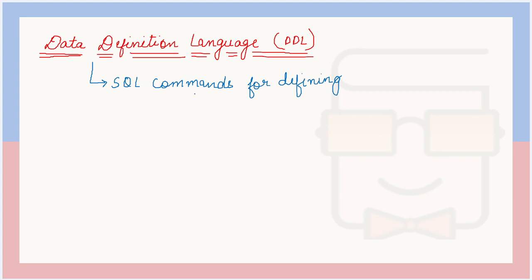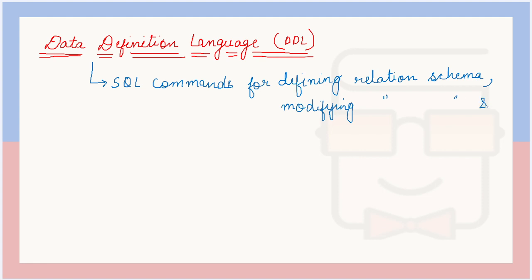All these commands of SQL come under the data definition language, or are known as DDL commands. So let us write it down: SQL commands for defining relation schema. Schema basically refers to the structure of the table. Not only defining or creating a table, but you can also use the DDL command for modifying the relation schema, and you can also use it for deleting the relation — that means deleting the entire table that is present in the database.